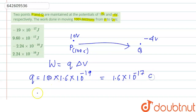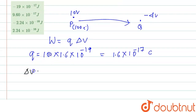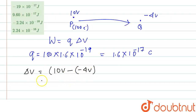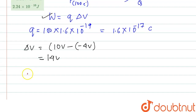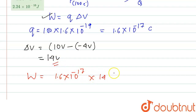Also, the change in voltage — the charges are moved from P to Q — so the change in potential will be 10 volt minus (minus 4 volt), which gives 14 volt. Now we have the equation and we are going to substitute the values. Work done will be Q, that is 1.6 into 10 to the power minus 17, multiplied by the voltage 14 volt, so this will be in joule.